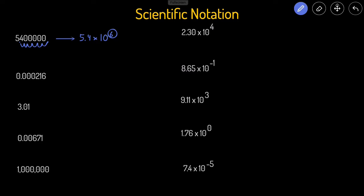For this next one, our goal is to move the decimal point so it's between the first two non-zero numbers, the two and the one. That'll be one, two, three, four times — so this will be 2.16 times 10 to the negative four. It's negative four because we moved it to the right and also this number is less than one, so it has a negative exponent.